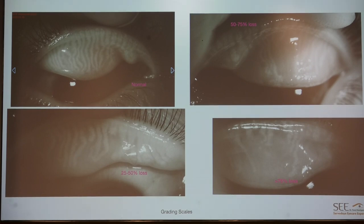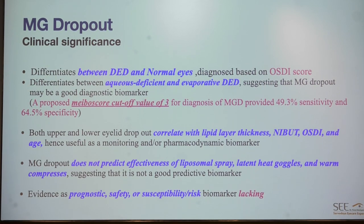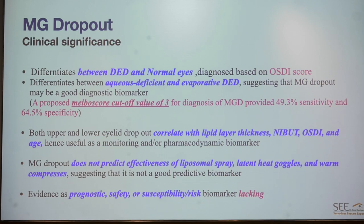Meibography is not recommended as a primary diagnostic tool but helps differentiate meibomian gland disease from aqueous-deficient dry eyes. Normal meibography is contrasted with variable meibomian gland dropout. Normally, no MGD dropout is seen below age 20, and above 20, up to 25% dropout is considered normal; more than that is pathological. Meibography helps differentiate non-specific symptoms from dry eyes, differentiates evaporative from aqueous-deficient types, and correlates well with NIBUT, OSDI score, and lipid interferometry, though it has no predictive value for therapy response.